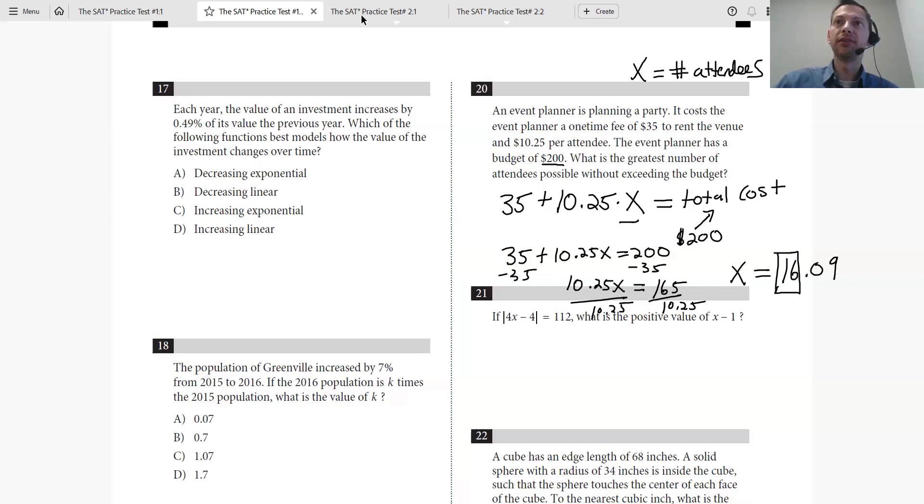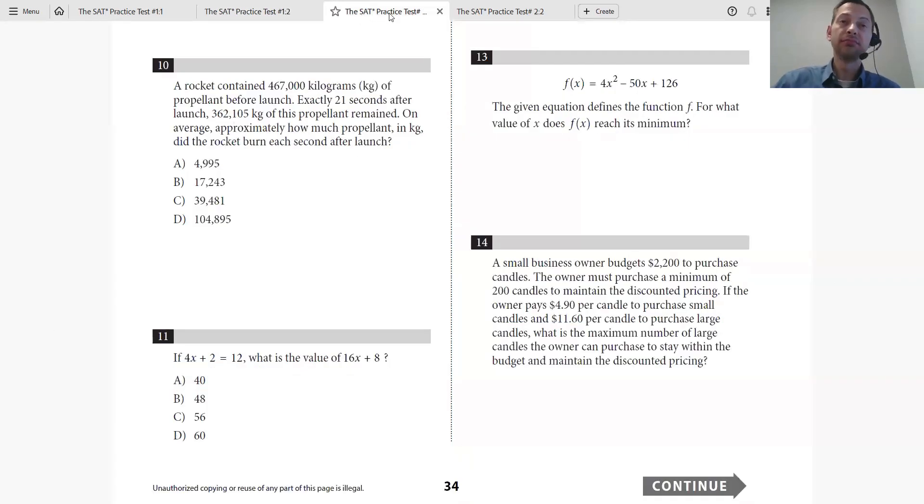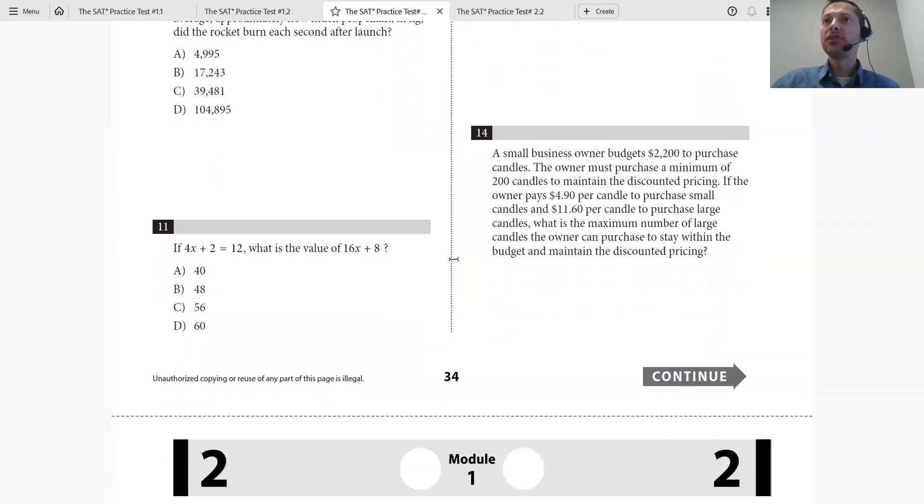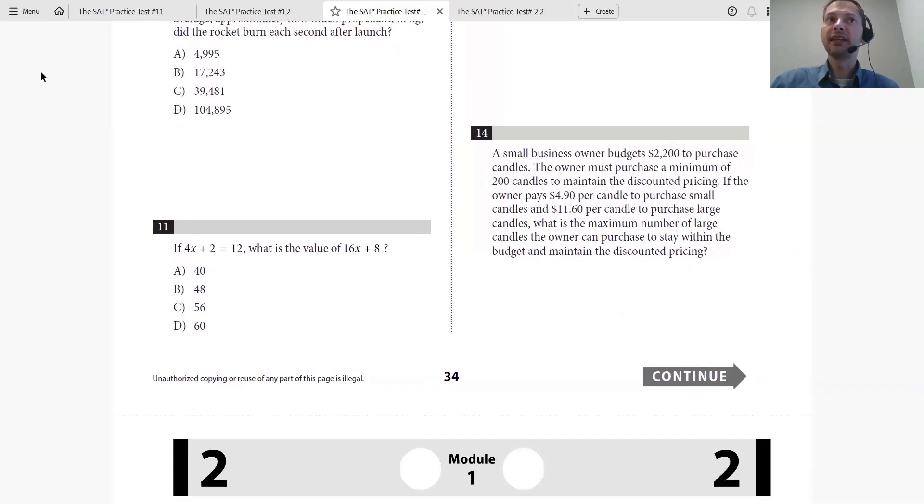Let's move on to another question from the digital SAT. Number 14. A small business owner budgets $2,200 to purchase candles. His budget is $2,200. The owner must purchase a minimum of 200 candles to maintain the discounted pricing.